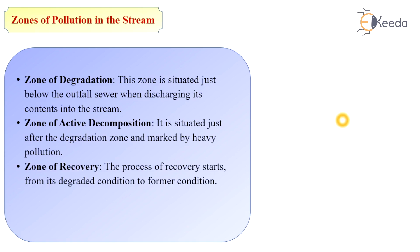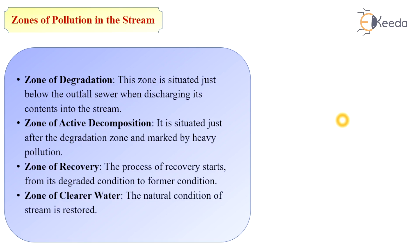The third zone is the zone of recovery. After all the decomposition process is done, the process of recovery starts, returning from the degraded condition to the former condition. The last zone is the zone of clearer water, where the natural condition of the stream is restored. In this zone, the water gets naturally purified, representing that pollution is over and the decomposition of organic matter is complete.